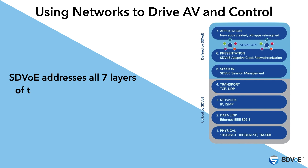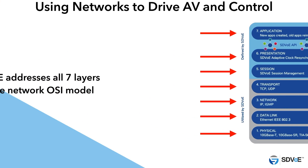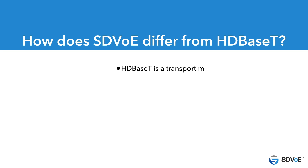SDVoE is a full-stack solution. That phrase is based on the seven-layer OSI network model. What it means is that SDVoE addresses everything from the infrastructure at layer 1, all the way up to control interfaces and applications at layer 7. This is important, and in my view, it's what HDBase-T missed. HDBase-T is a transport, and that's it — it's a way to move AV and control signals from one end of a cable to another.